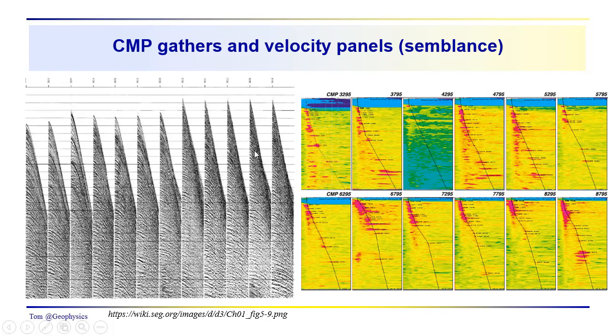So if we take a look at this, we can kind of see we're looking at semblance here. The semblance reaches a peak, and the interpreter has kind of picked this peak. But over here we're wondering, what did the interpreter do? Why did the interpreter go off to higher velocities?